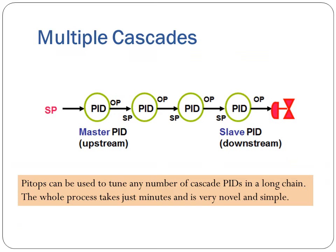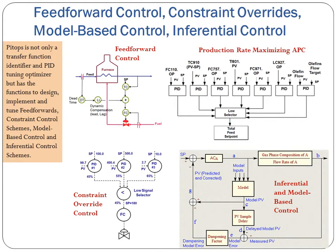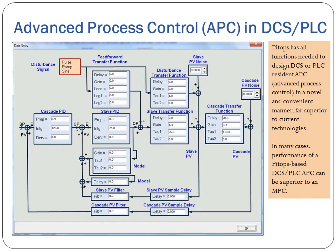PyTops can be used to tune any number of cascade PIDs in a long chain — the whole process takes just minutes and is very novel and simple. PyTops is not only a transfer function identifier and PID tuning optimizer, but also has functions to design, implement, and tune feedforward constraint control schemes, model-based control, and inferential control schemes. PyTops has all the functions needed to design DCS or PLC resident APC in a novel and convenient manner, far superior to current technologies. In many cases, performance of a PyTops-based DCS/PLC APC can be superior to an MPC.